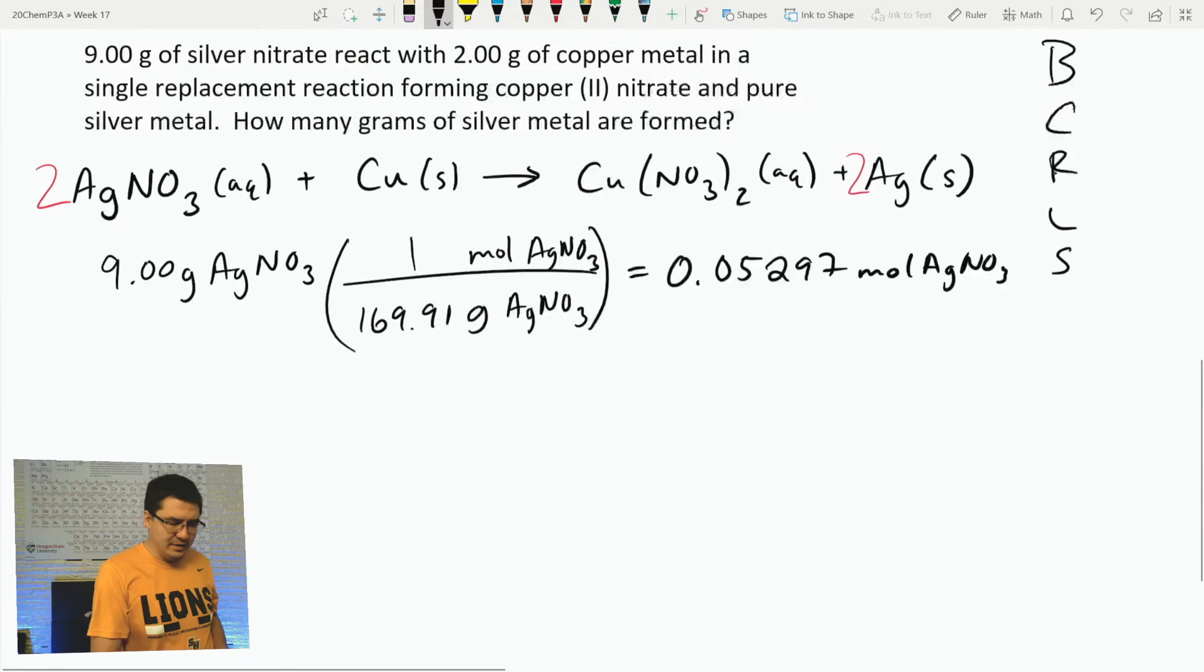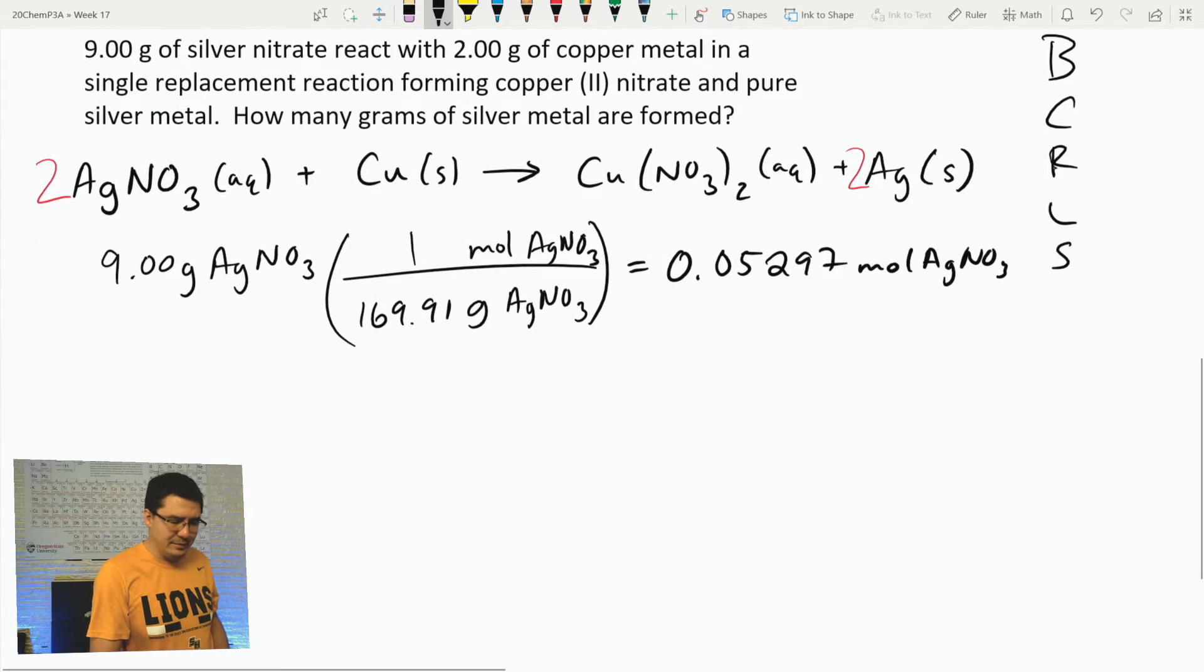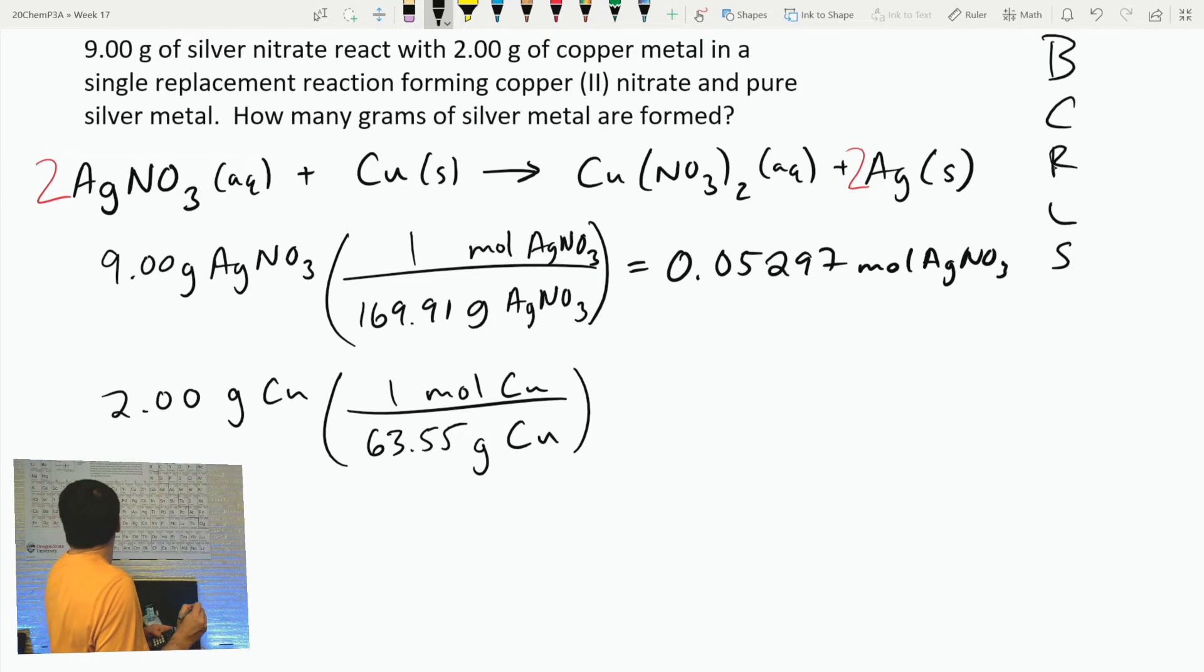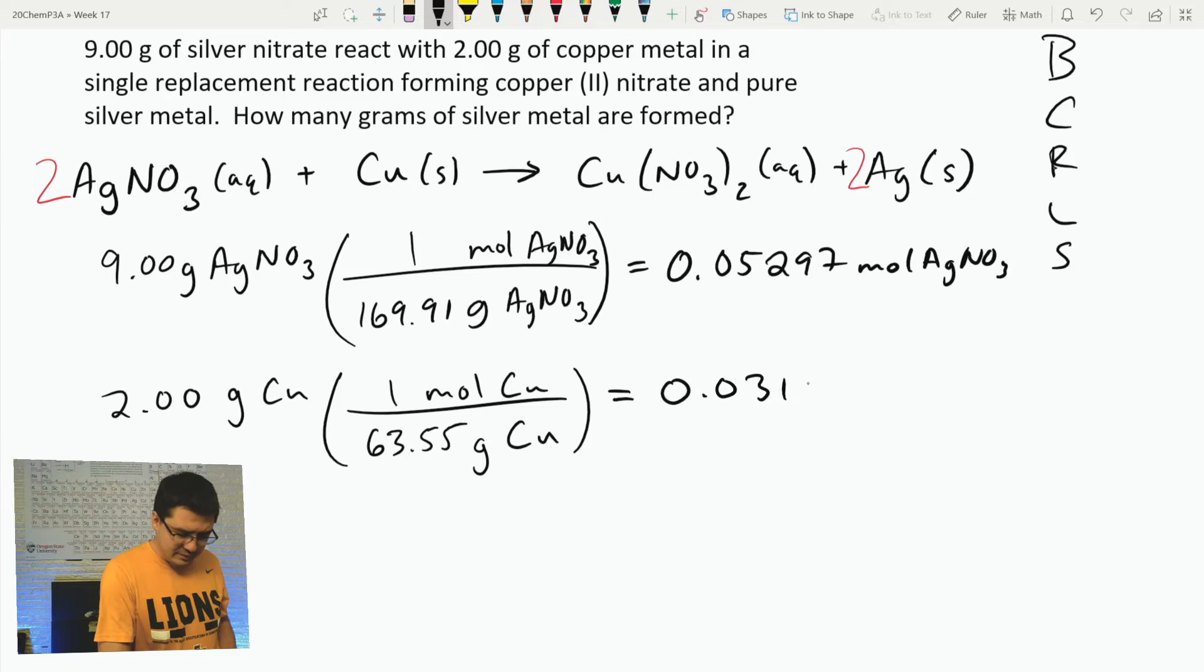I'm going to do the same thing with the 2 grams of copper metal. That's just Cu. One mole of Cu has a molar mass of 63.55 grams. So 2 divided by 63.55 comes out to 0.03147 moles of copper.